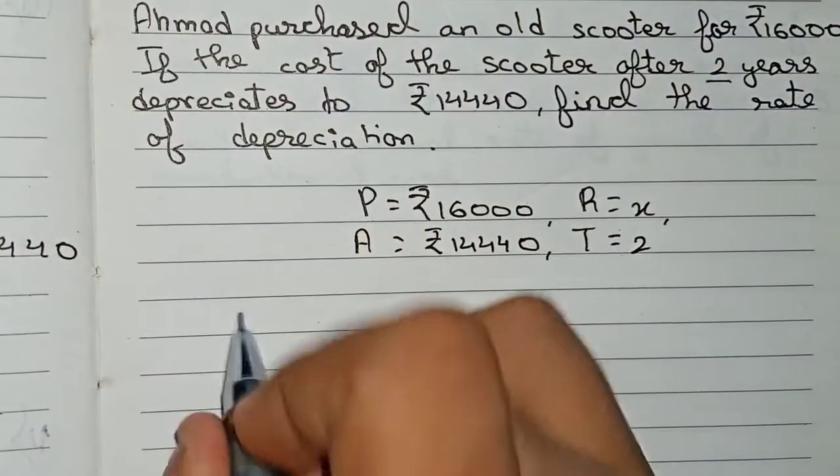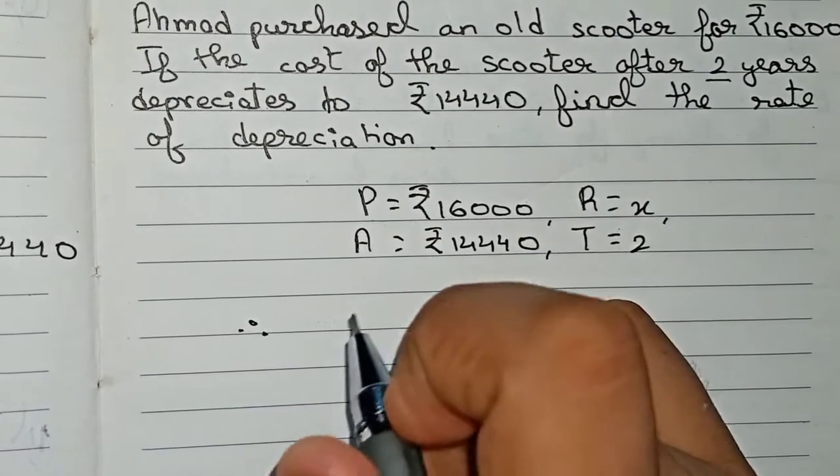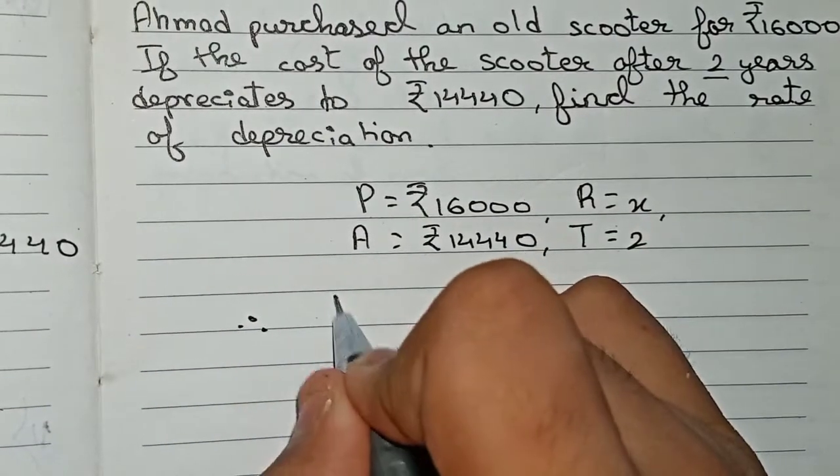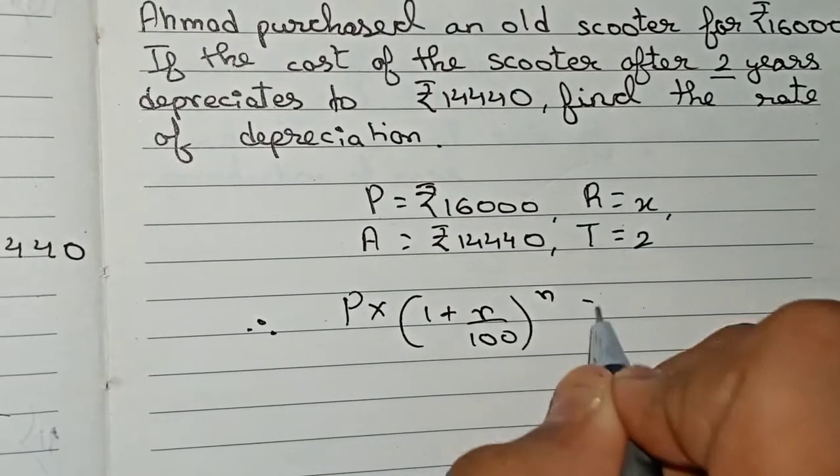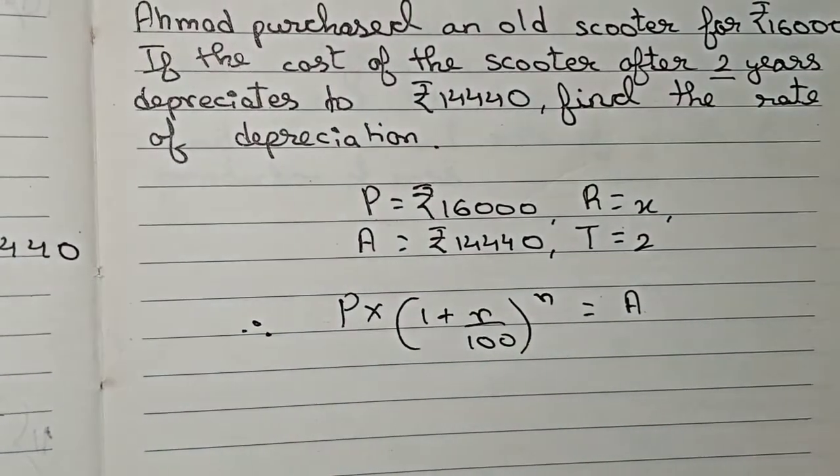So therefore, now you can write our formula. You know our formula: principal times (1 plus r/100) to the power n equals the amount. You know this formula.